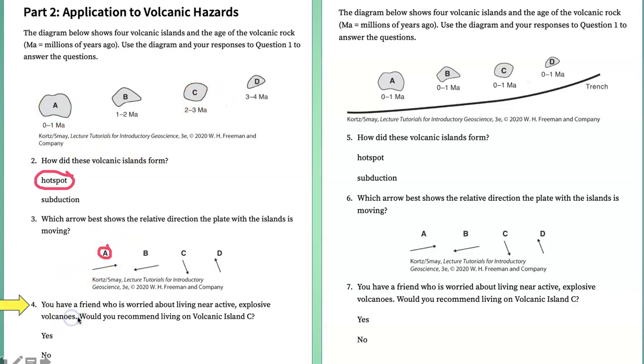Finally, you have a friend who is worried about living near active volcanoes. They want to know if you would recommend that that friend move to island C. And your answer should be yes. If this is a hot spot chain of volcanoes, then over here on island C, volcanism is no longer active.